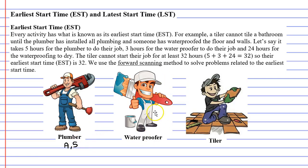Then we have our waterproofer, and the waterproofer is kind of like a painter, except they paint this waterproof membrane on the walls and on the floor. We'll call this job activity B. It's going to take the waterproofer about three hours to paint the waterproofing membrane, but it's also going to take about 24 hours for the waterproofing to dry. So three plus 24 gives us a weight of 27 for our activity.